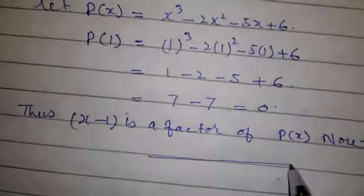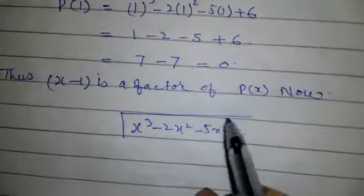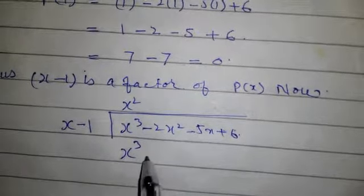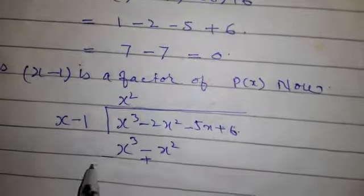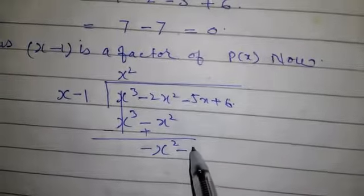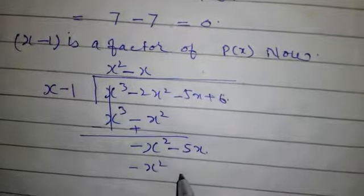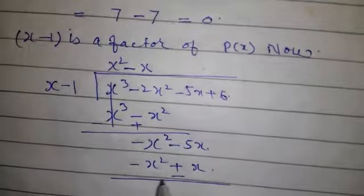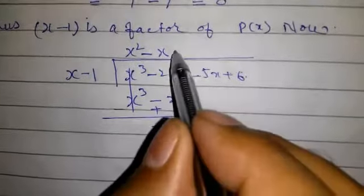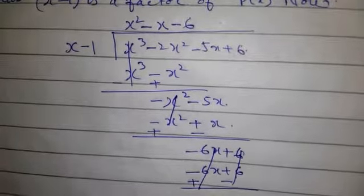Now we divide the polynomial x³ - 2x² - 5x + 6 by its factor (x - 1). We take x². x³ - x², changing the sign, these cancel. We get -x² - 5x. Then -x² + x, change the signs. We get -6x + 6, then -6x + 6, changing the signs. These cancel, nothing remaining.